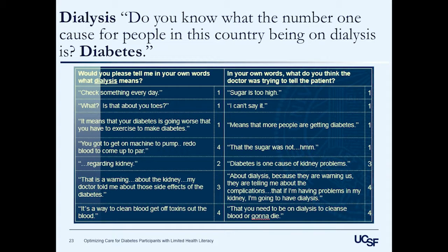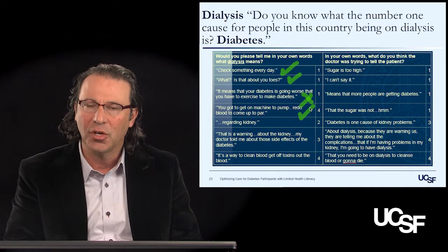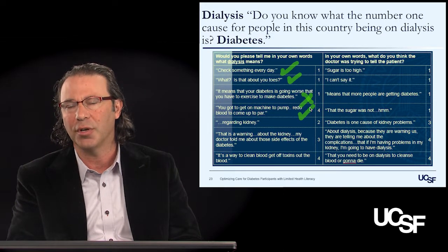A score of one means no understanding and a score of four means total understanding. One patient said 'check something every day,' presumably thinking dialysis was something like 'diurnal' or daily — not correct. Another said 'it means your diabetes is going worse and you have to exercise' — this patient not only didn't understand but understood the opposite to be true. A third patient said 'you got to get on a machine to pump and redo blood to come up to par' — absolutely correct, a score of four. As you can see, there is tremendous variation in understanding of the word dialysis.